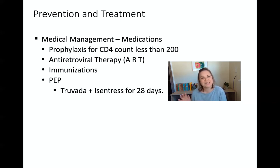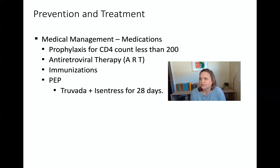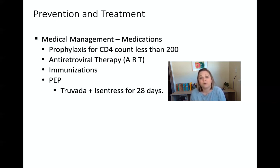PEP stands for post-exposure prophylaxis. As an ER nurse, I had to give discharge teaching to many colleagues who had needle sticks with a confirmed HIV source. PEP is for someone who has a known high-risk exposure — they'll take a couple of antiviral medications. Typically we gave Truvada and Isentress for 28 days. Unlike first-generation HIV medications that were really hepatotoxic, these newer medications really don't have severe side effects — just some mild flu-like symptoms. They have to take them consistently without fail for the full 28 days to prevent the HIV virus from settling into their cells.